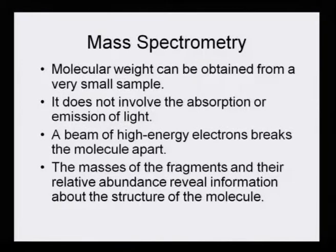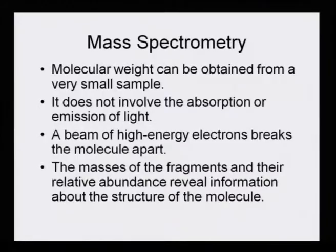First, mass spectrometry helps us find out the molecular weight and can be obtained from a very small sample — the sample size can be as small as possible, and yet we can get the molecular weight of the compound. It does not involve the absorption or emission of light, so it is not a true spectroscopy method.